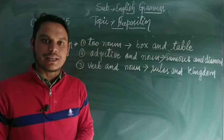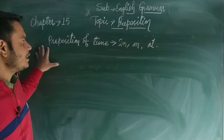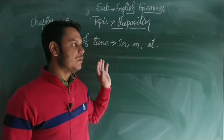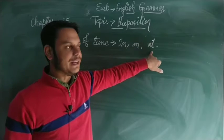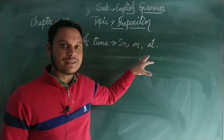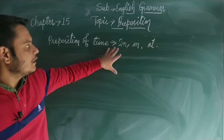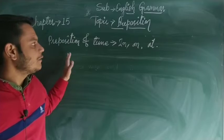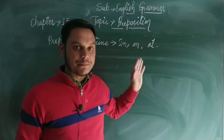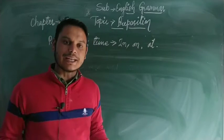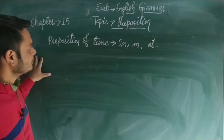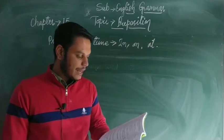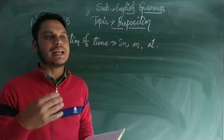Now let's see how we can use prepositions of time. The prepositions at, on, and in can be used to indicate time. Importantly, in, on, and at can also be used as prepositions of place, but the conditions will be a little different.